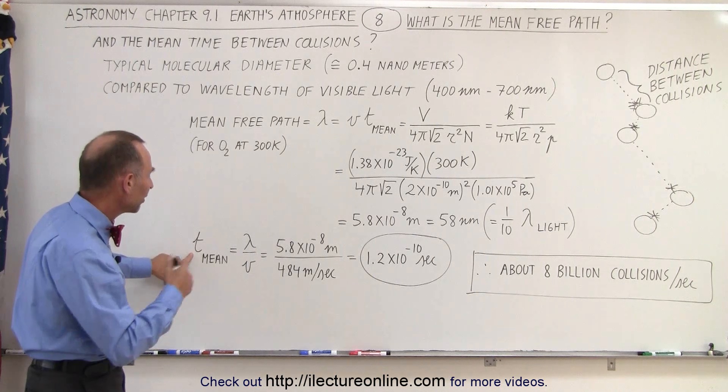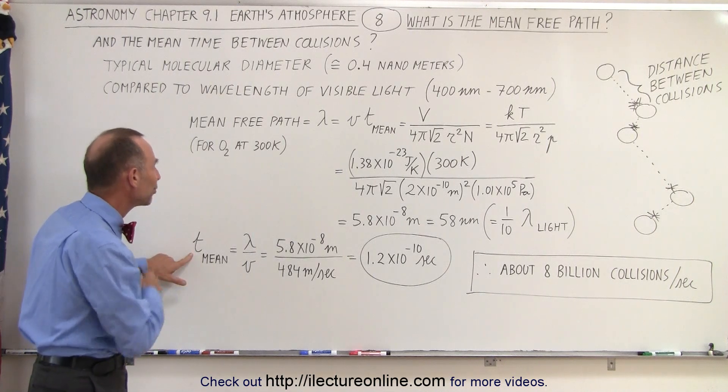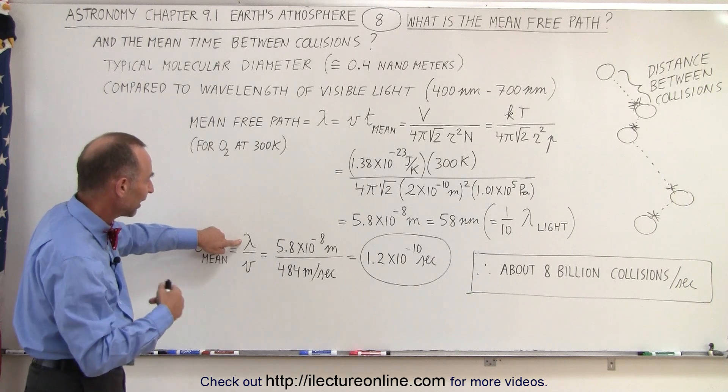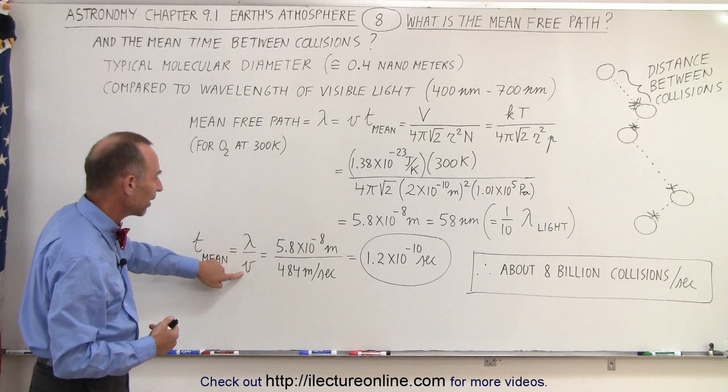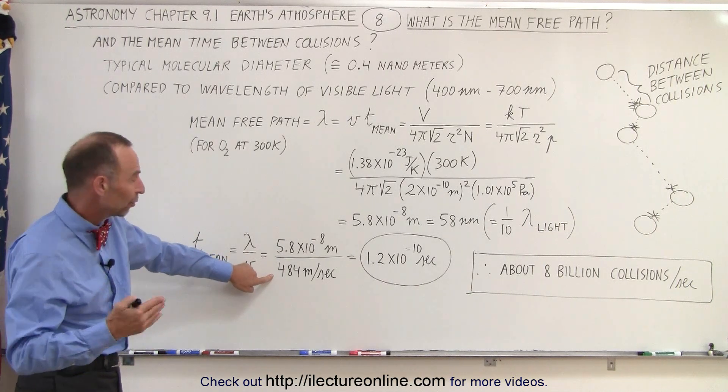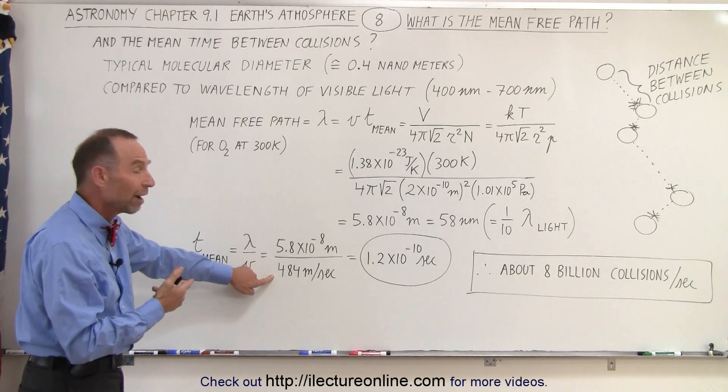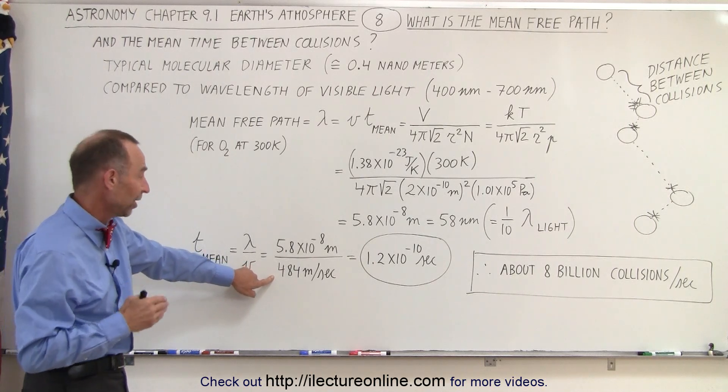The mean time between collisions is therefore the distance that they travel on average, divided by their velocity. And in the atmosphere, oxygen molecules at 300 Kelvin travel at almost 500 meters per second.